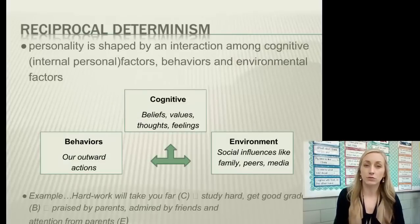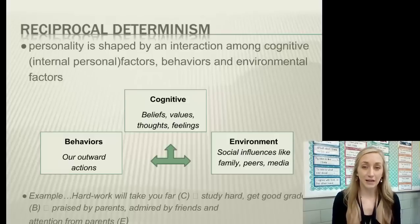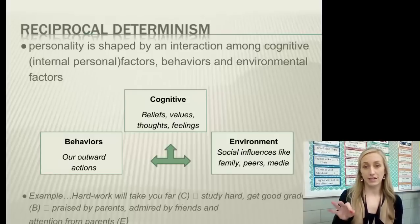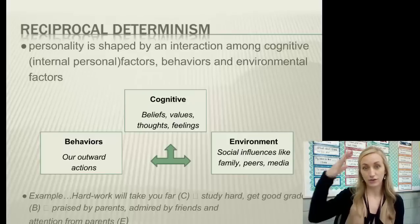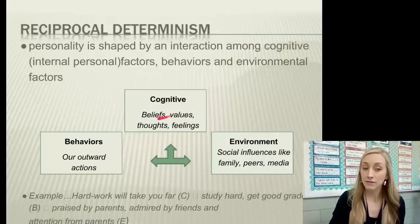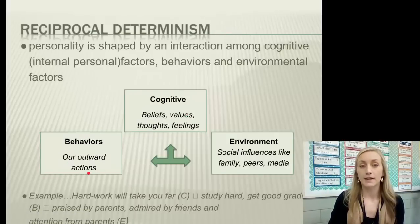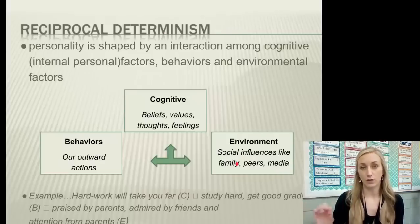Bandura came up with something called reciprocal determinism. It says that our personality is shaped by an interaction of essentially three things: our cognitive factors — internal personal factors like beliefs, values, thoughts, and feelings — interacting with our behaviors, which are our outward actions, and our environmental factors, such as social influences like family, media, and peers. That's the social part of the social cognitive approach.